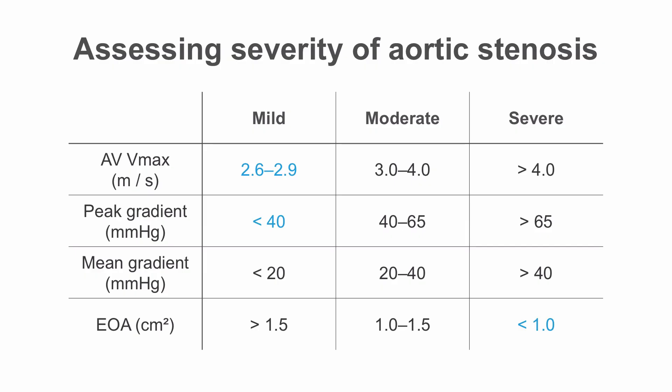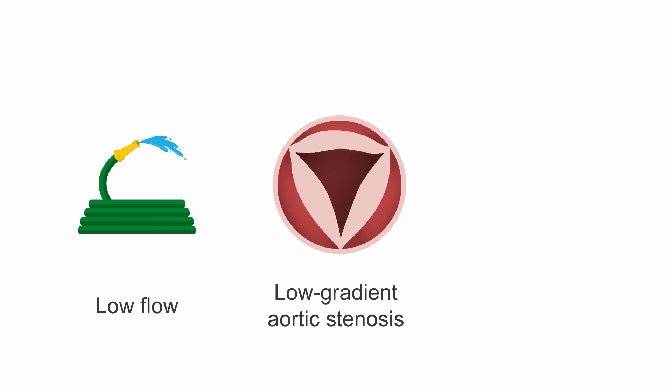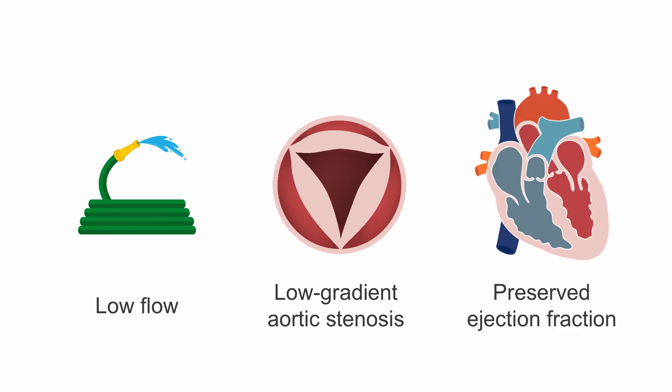Occasionally, it's possible to find discordant data with a low gradient, small effective orifice area, and a calculated low flow rate, yet the left ventricular function is apparently normal. This situation reflects low flow, low gradient aortic stenosis with preserved ejection fraction, or, as it tends to be referred to, paradoxical low flow, low gradient aortic stenosis.